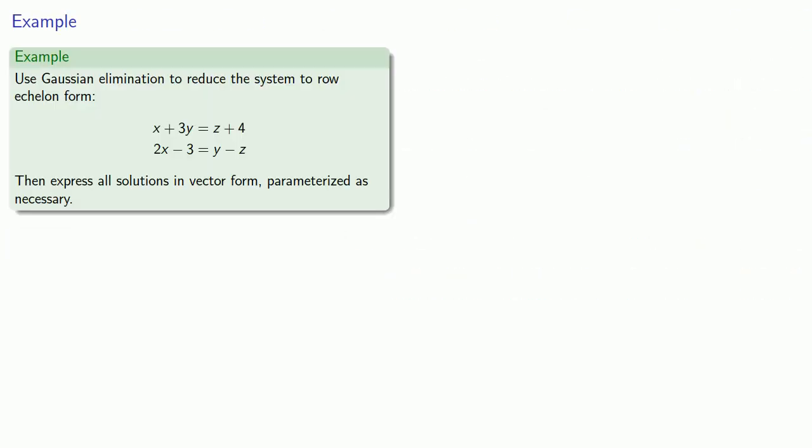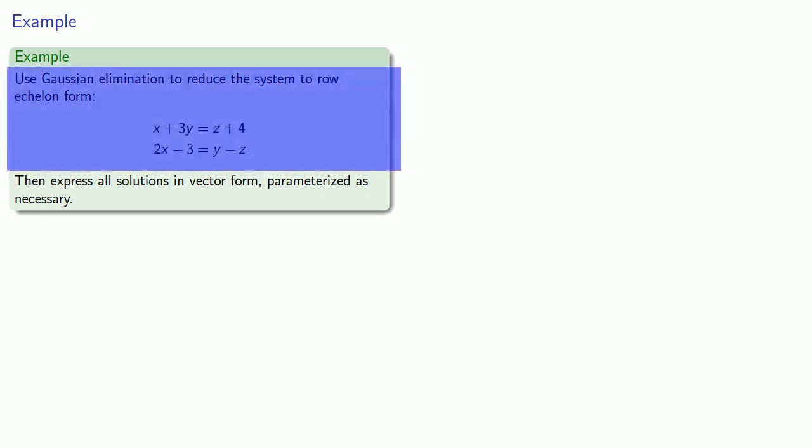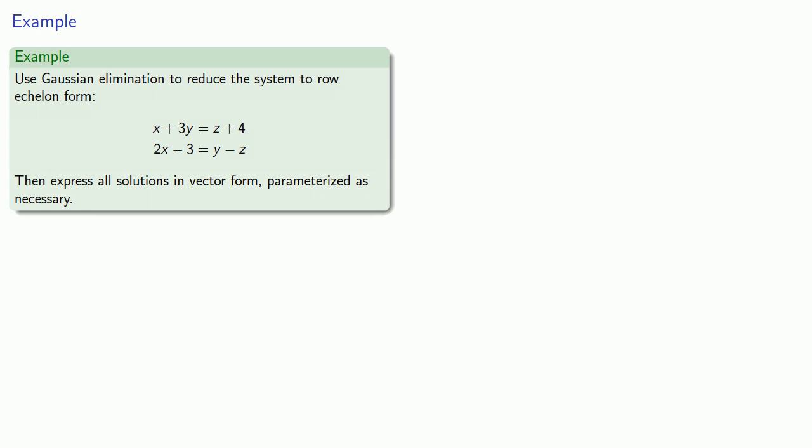Let's try this out with an actual system of equations. We'll use Gaussian elimination to reduce the system to row echelon form, and once we're done we'll express all solutions in vector form, parametrizing as necessary.